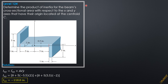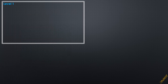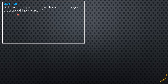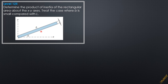Level 125: Determine the product of inertia of the rectangular area about the x-y axis; treat the case where b is small compared with l. Here is the given figure. We consider a differential strip element along x. The horizontal projection of the differential area is dx. This length is greater than that horizontal projection because it is the hypotenuse of a very small right triangle, with the angle of inclination being alpha.